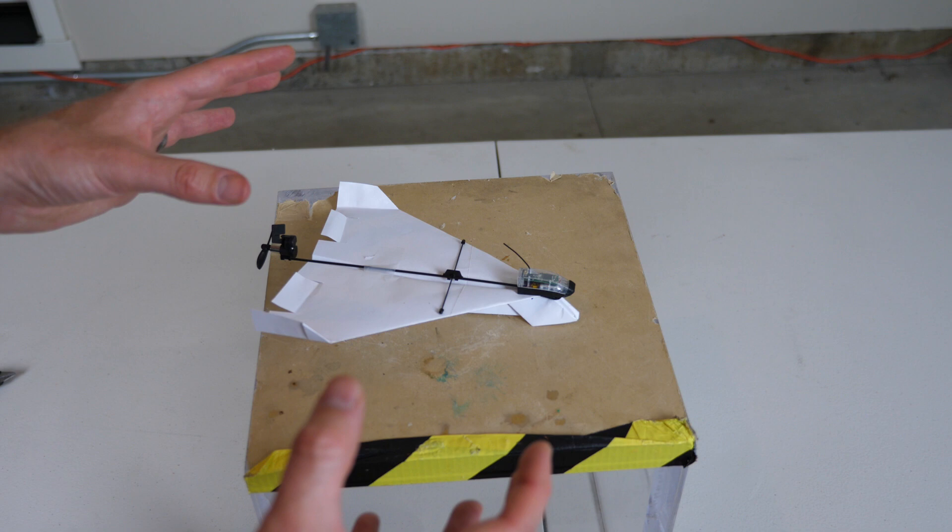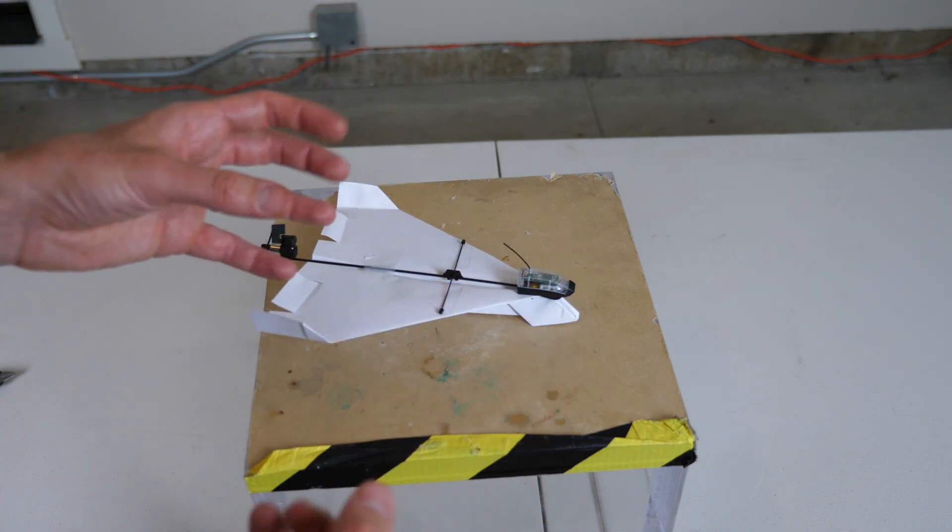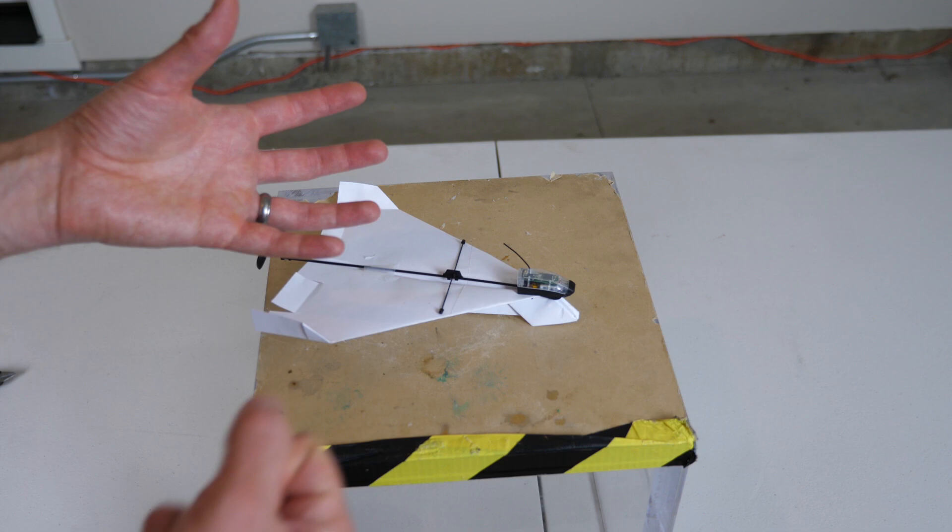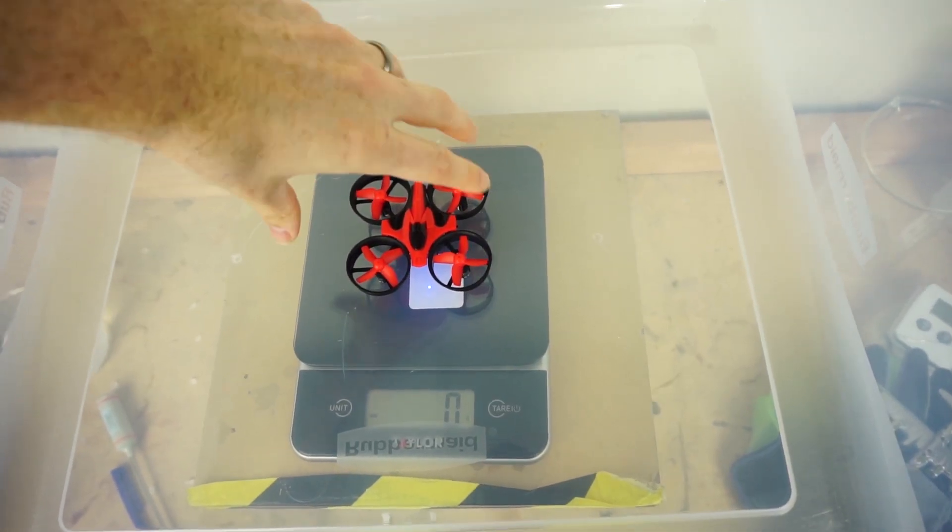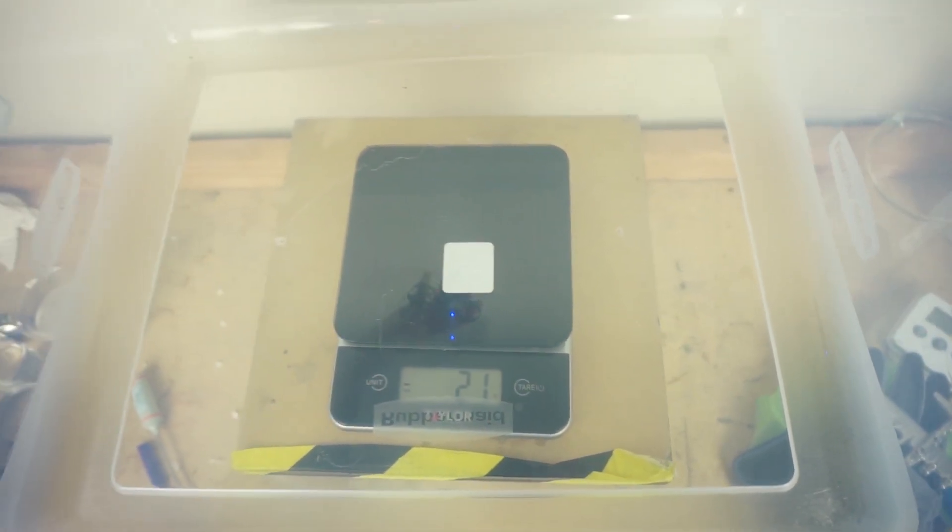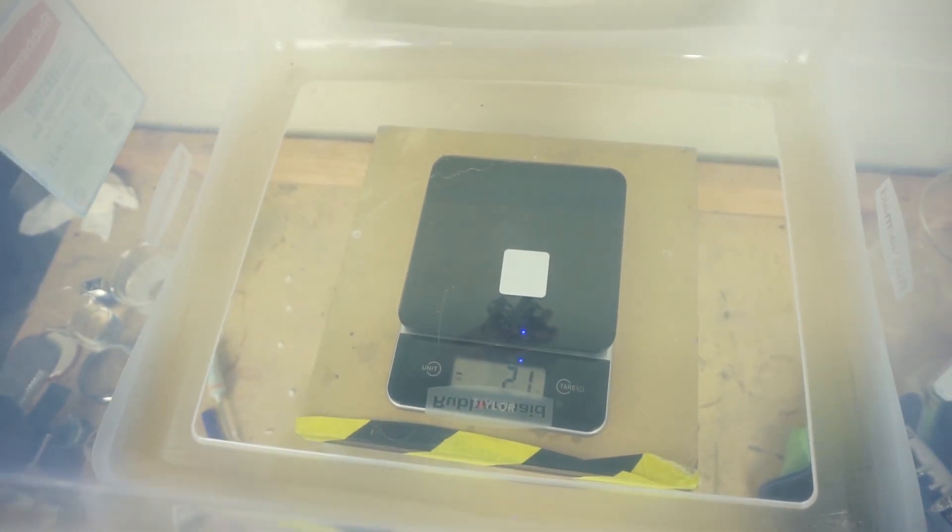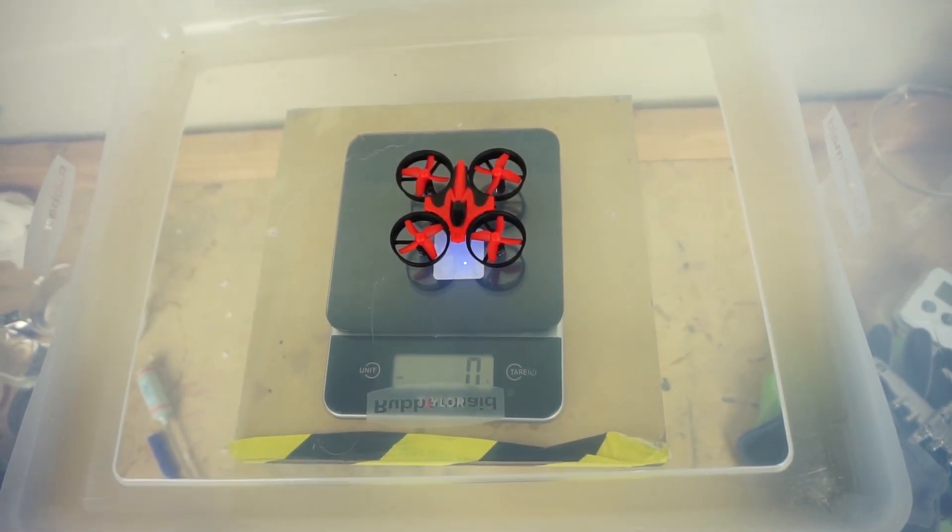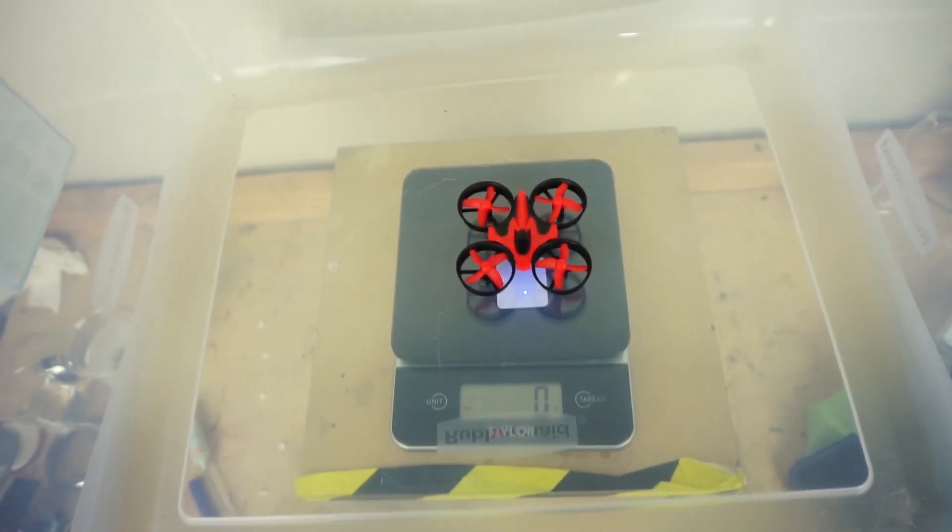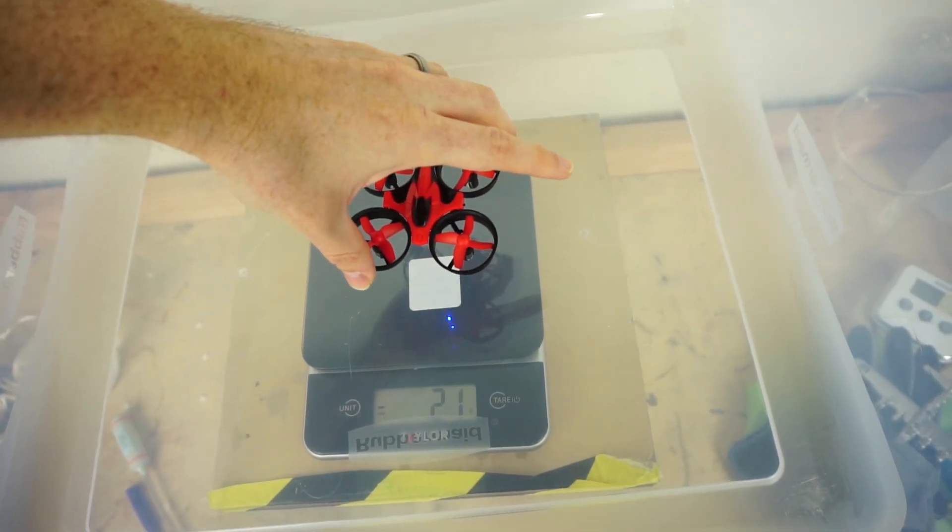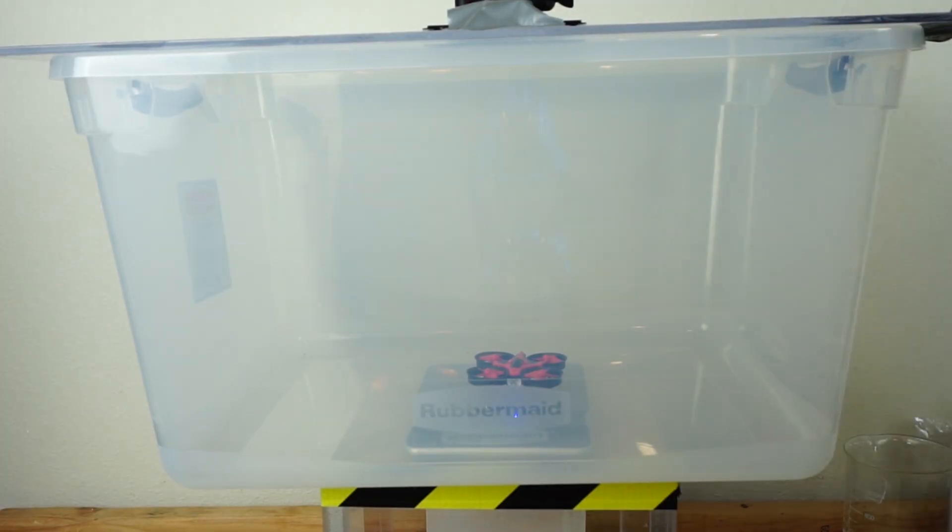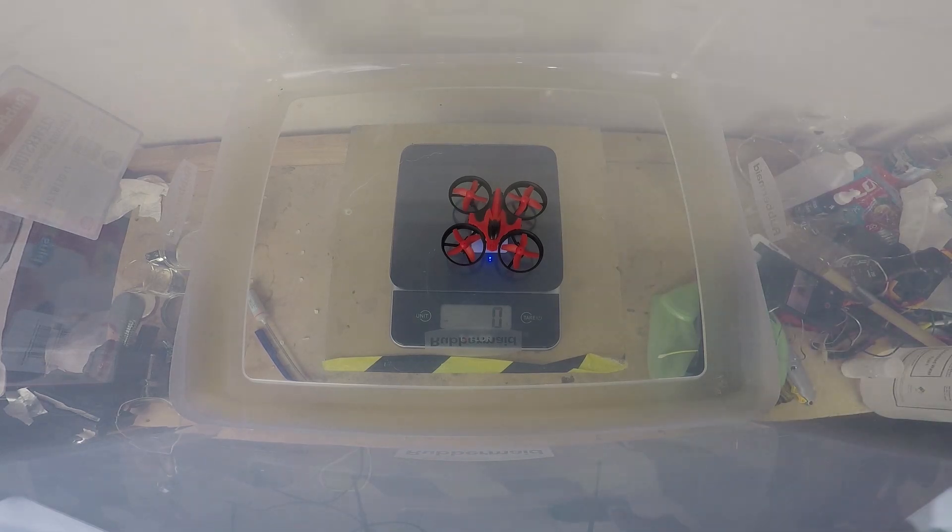In fact, if you take a drone and you weigh it on a scale, you'll find that as it lifts up and flies, the scale does not change weight. So let's see what happens when I lift the drone up. So if I lift it up, it weighs 21 grams less. Set it back down, back to zero. So this drone weighs around 21 grams. Okay, we're at zero. Okay, let's see what the scale says when I take off. Three, two, one.